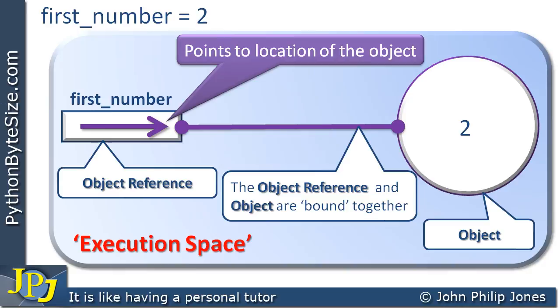So conceptually, what we can see here, we have an object reference, and we have an object, and they are bound by this line that I've joined them together with. So for this pretty straightforward program statement, first number is assigned to, we can see under the hood of Python, a few things went on.